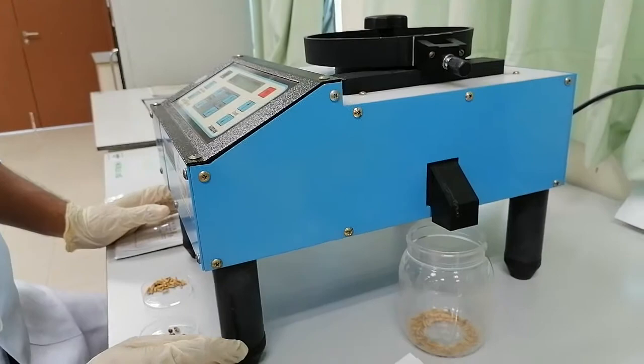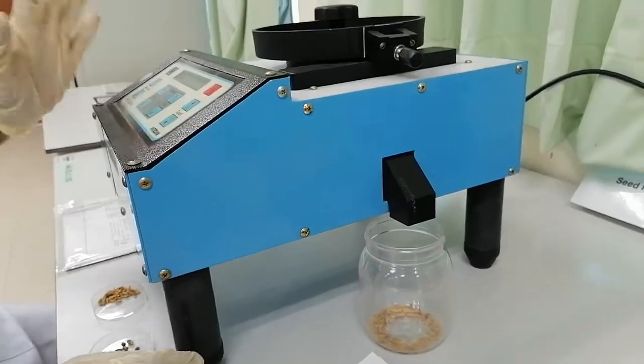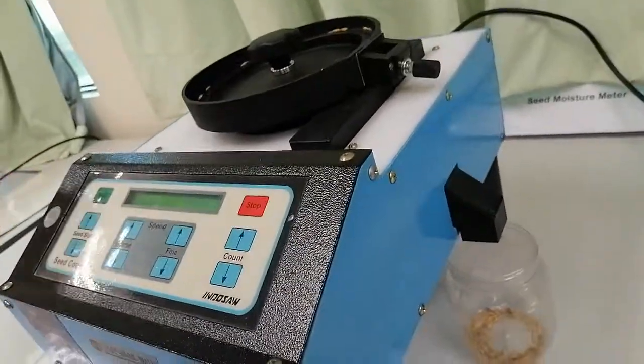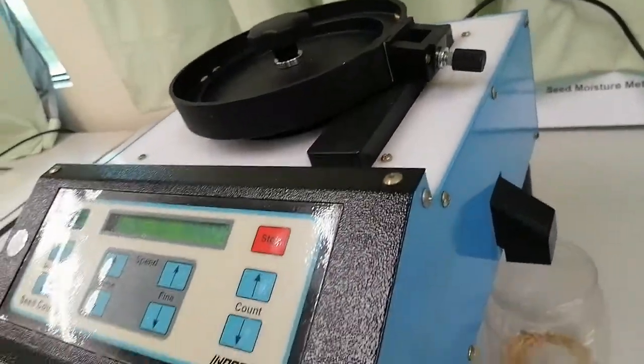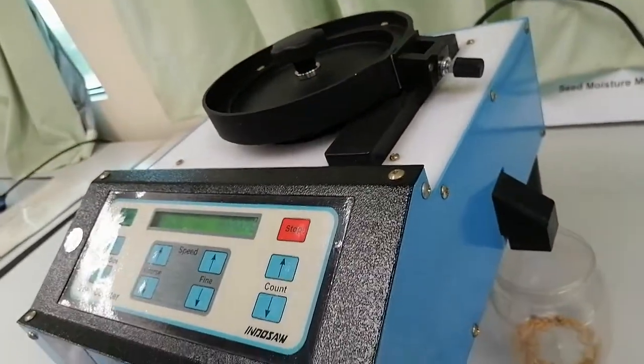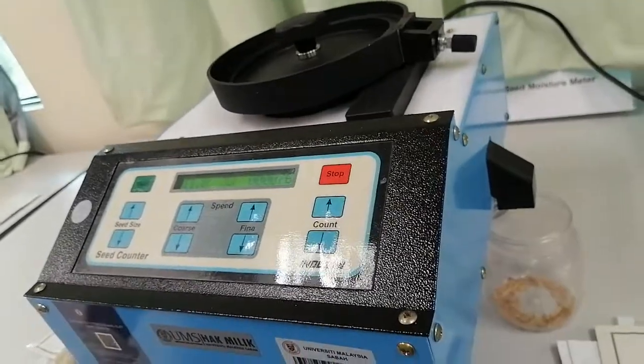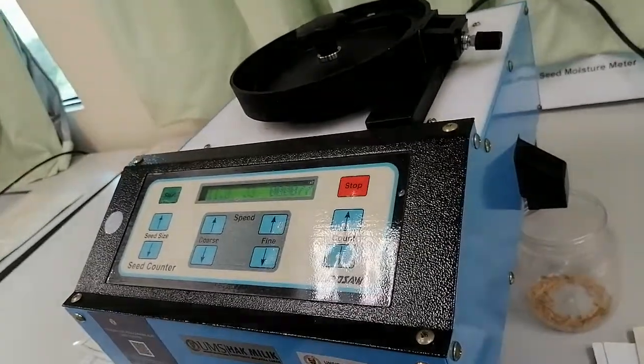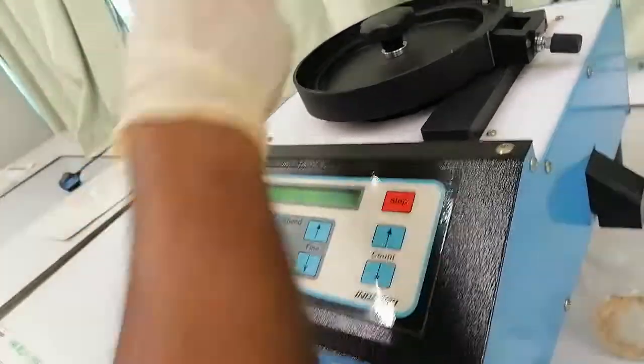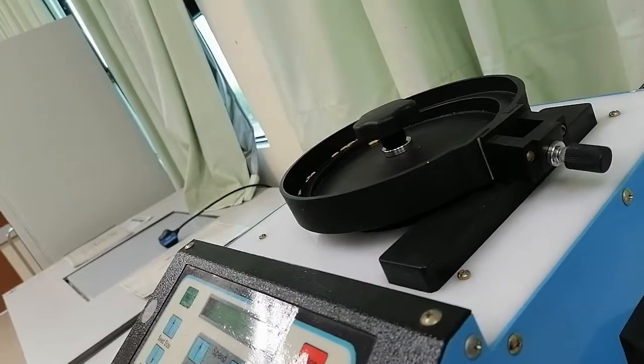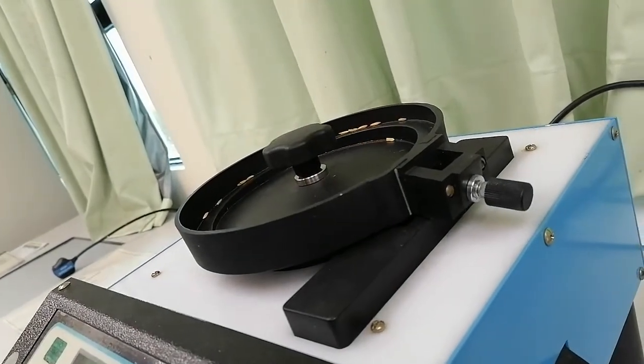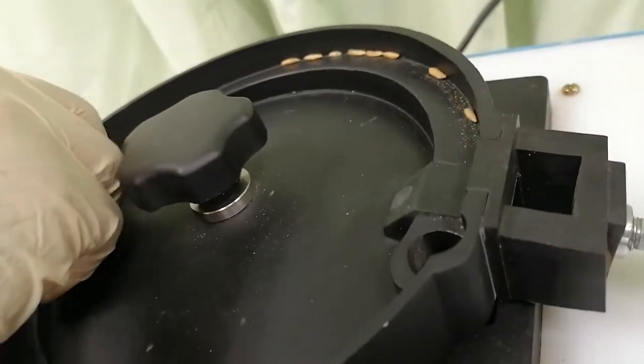You can see how seed is going and automatically counting here. Until 100 they will continue to move. When 100 reach, the machine will automatically off. This is the good facilities of that machine. That means 100. The seed is about to finish, so I am giving more seeds to reach 100.